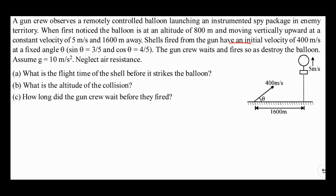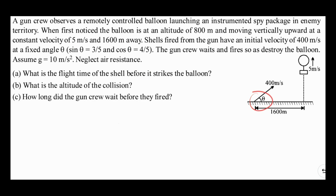Shells fired from the gun have an initial velocity of 400 meters per second. The person is trying to fire on this balloon. The shells are fired with a velocity of 400 meters per second, and the angle theta is fixed — cos theta and sin theta are also given to us. The gun crew waits and fires so as to destroy the balloon. G is given as 10 meters per second squared and we need to neglect air resistance.